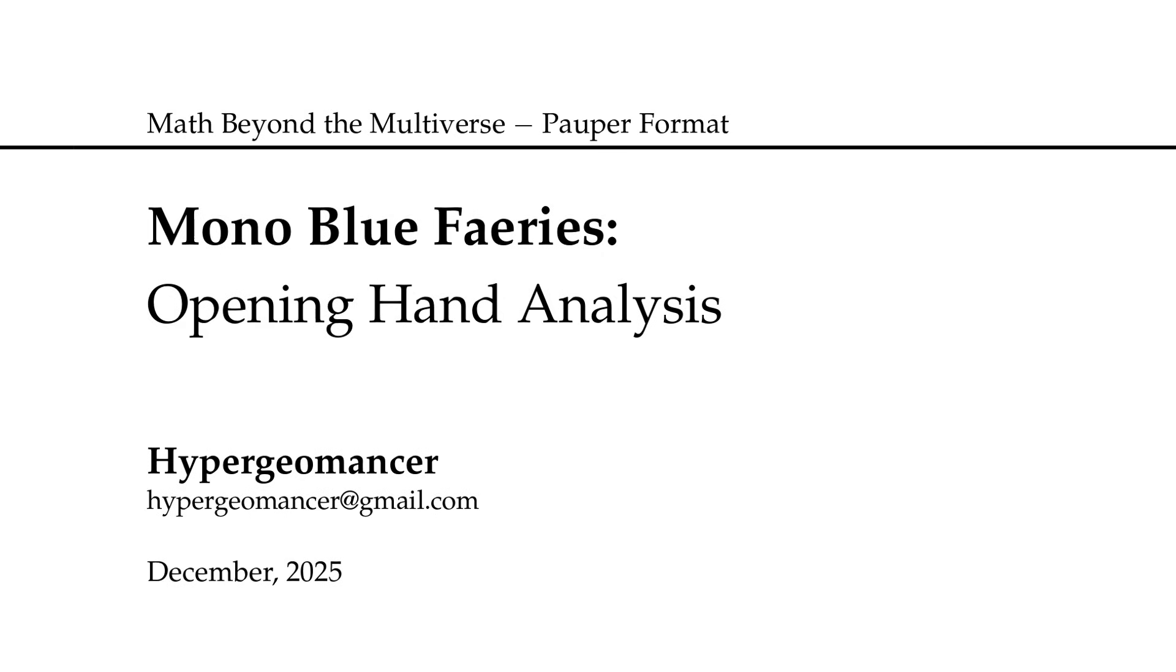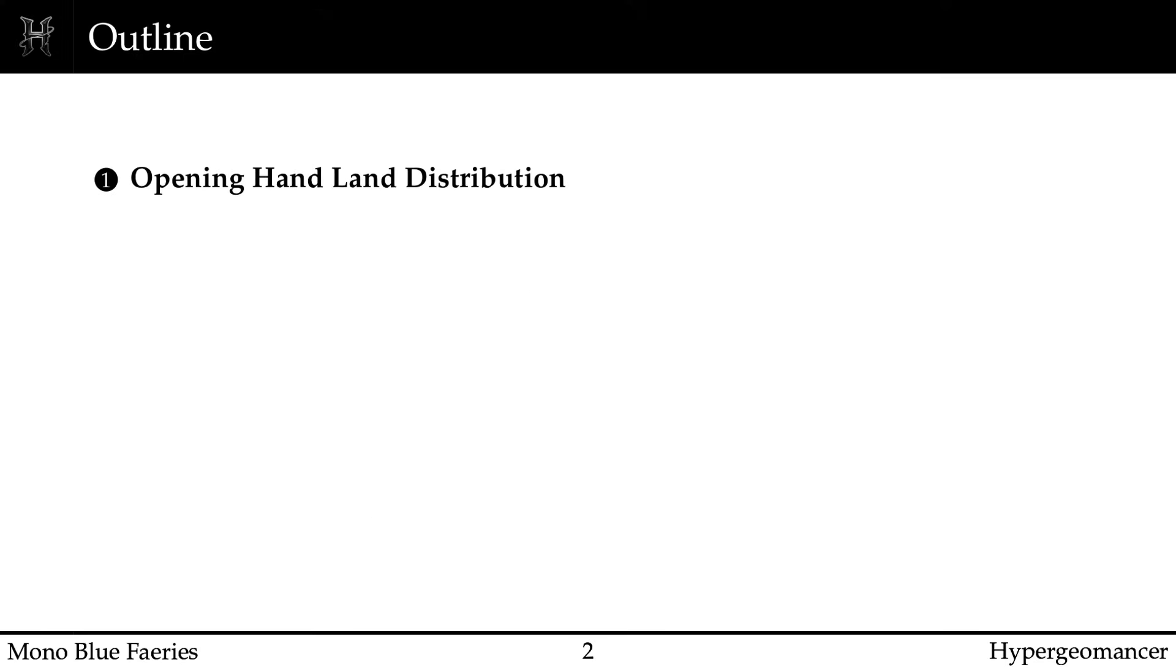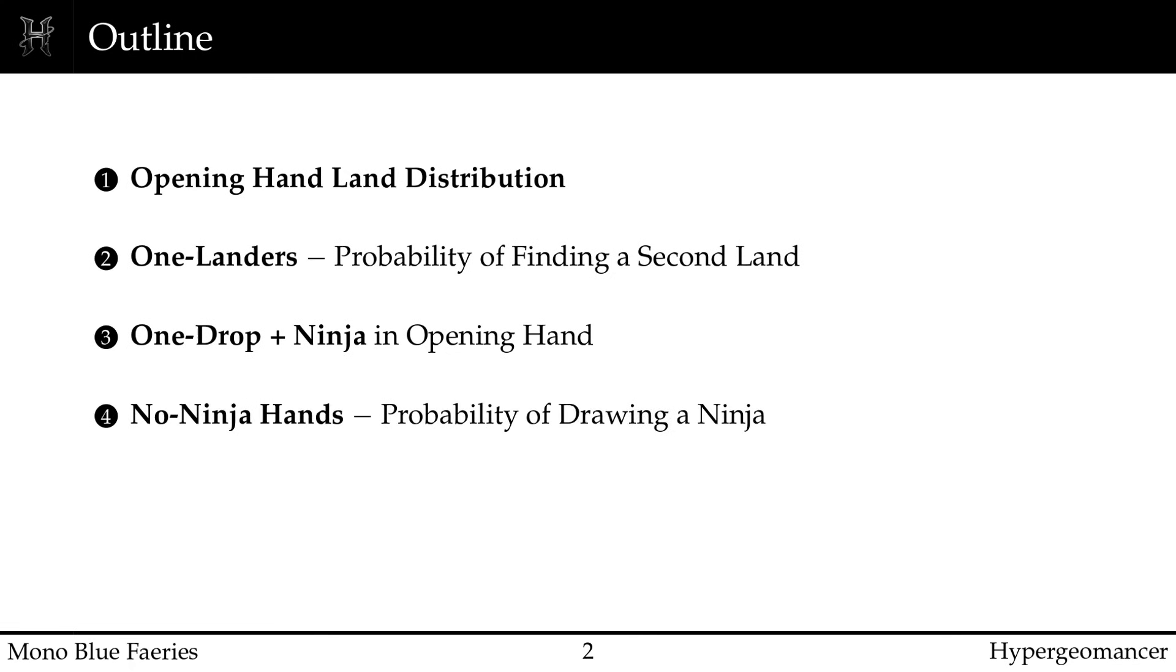We'll break the analysis into four parts. First, we'll look at opening-hand land distribution and understand how different land counts shape the hands you actually see. Second, we'll study one-land hands and compute the probability of finding a second land, especially when card selection is involved. Third, we'll move to the core strategy of the deck, the probability of opening a one-drop plus ninja, and how mulligans improve these odds. Finally, we'll look at hands with no ninja and examine what it means to rely on drawing into your payoff creatures.